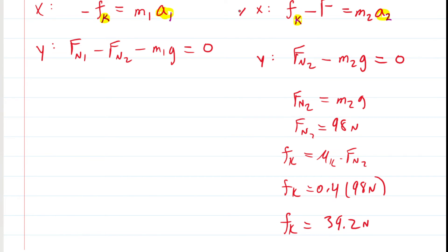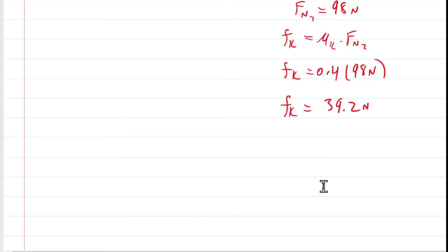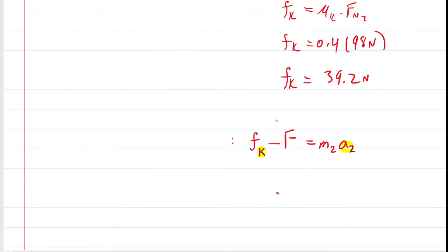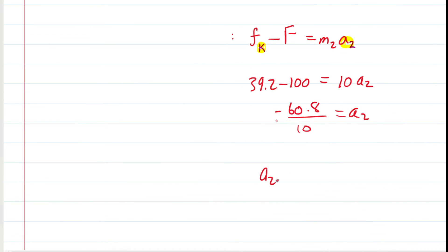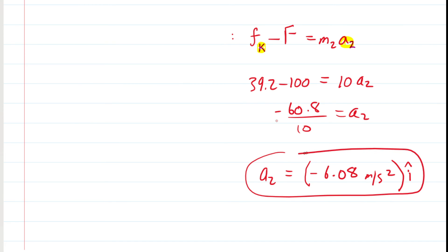Now looking back at the X equation for block 2, we can plug in 39.2 newtons for F sub K and 100 newtons for F, along with M2 equals 10 kilograms, and solve for the acceleration of block 2. The left side works out to negative 60.8, and dividing by 10 gives A2 equals negative 6.08 meters per second squared. Since the blocks are accelerating in the horizontal X direction, in unit vector notation the acceleration of block 2 is negative 6.08 meters per second squared in the i-hat direction.